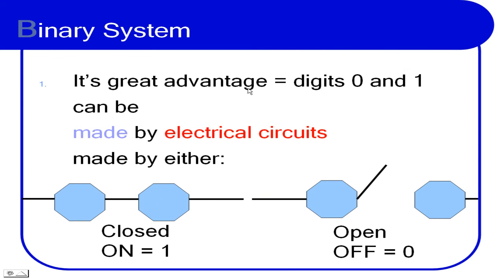Finally, its great advantage equals digits, nought and one, can be made by electrical circuits either by closed, on, or open, off.